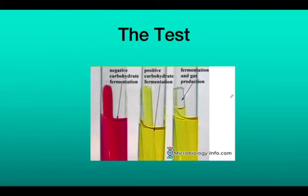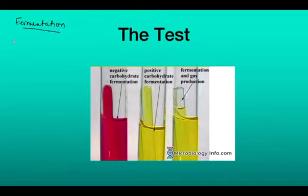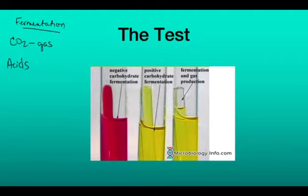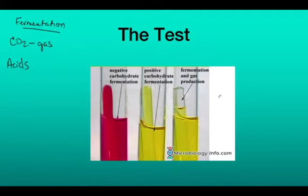Here's the actual test, and we're going to talk about what goes on in this tube. We are looking for the properties of fermentation. In fermentation we get two waste products: CO2 and acids. CO2 is in gaseous form, so to observe if CO2 production has occurred — just like in our nitrate test — the phenol red test also has a Durham tube, a small tube inside the larger test tube that is upside down. If gas production occurs, CO2 gas gets trapped inside the Durham tube and we will see a gas bubble at the top.